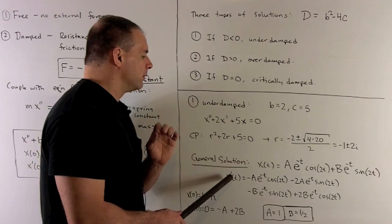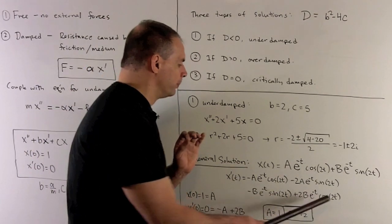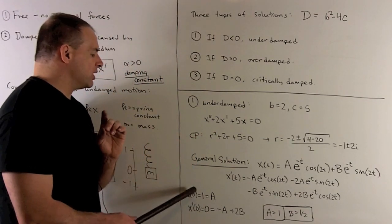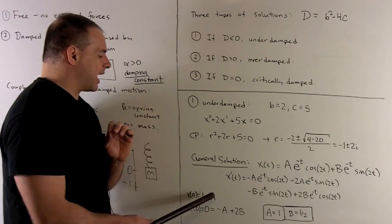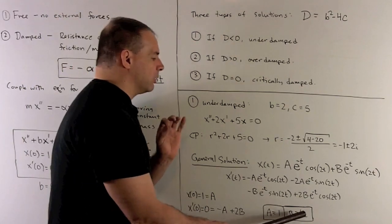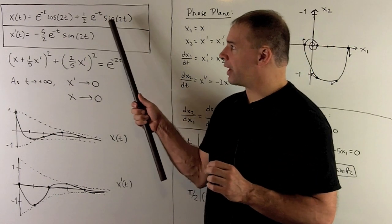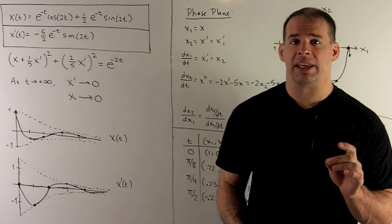We take its derivative. Okay, so we have to work all that out. So that's product rule and chain rule. Then we plug in our initial conditions. So we put zero in for x and x prime. What's going to come out is A is equal to 1, B is going to be equal to 1 half. Here's our solution for x of t. Here's x prime of t.